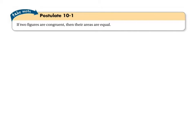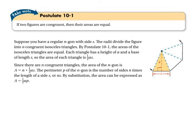Postulate 10-1: if two figures are congruent, then their areas are equal. That should be really intuitive — of course they have equal areas; they're the exact same size and shape. Suppose you have a regular n-gon with a side length of s. The radii divide the figure into n congruent isosceles triangles. The n in n-gon is the number of sides, and you're going to get that many triangles going from vertex to vertex all the way around. So you will get n congruent isosceles triangles.